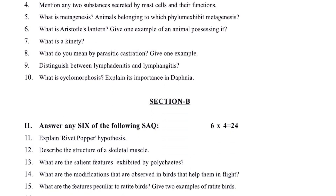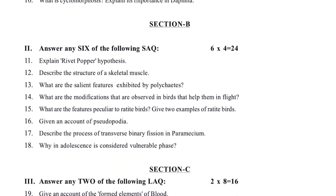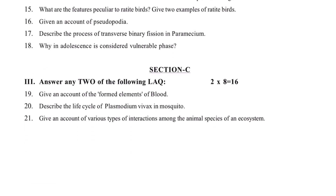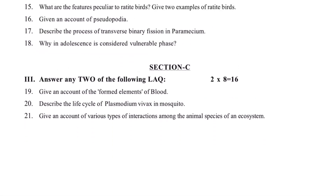In order to make questions 4 to 15: Euglena, Pseudopodia, and Paramecium transverse binary fission are covered. Questions around 17 include Plasmodium life cycle and Musket life cycle. There are also various types of interactions among animal species and ecosystem.